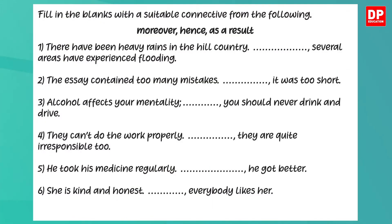Okay, let's check your answers. Look at the first one: 'There have been heavy rains in the hill country. Blank. Several areas have experienced flooding.' You have a cause and effect relationship here — heavy rains caused flooding. So the answer is: 'There have been heavy rains in the hill country. As a result, several areas have experienced flooding.'